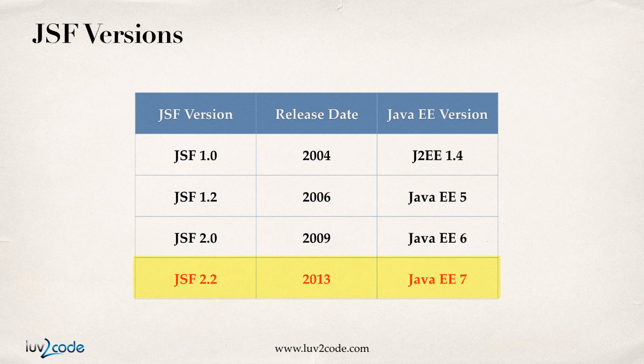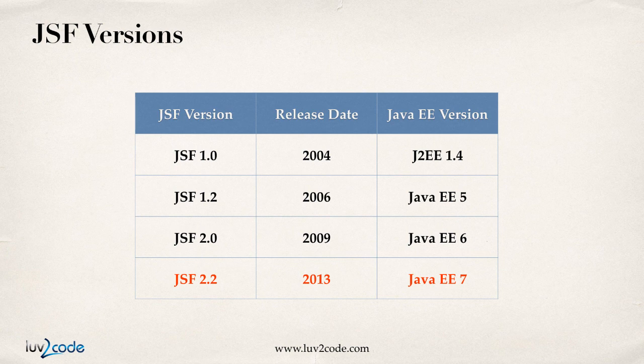You also want to make sure that you have an application server that can support JSF 2.2, so your app server should have support for Java EE7 or higher. There's a new version of JSF coming out — JSF 2.3 is slated to come out late 2016 or early 2017, hitting mainstream around the 2017 timeframe. You can always Google 'JSF release date' to get the latest news on when JSF is coming out. But this course will focus on JSF 2.2.